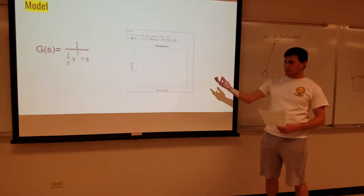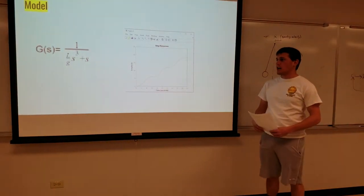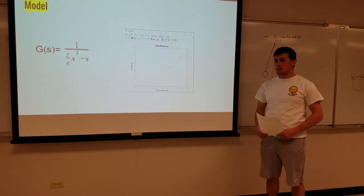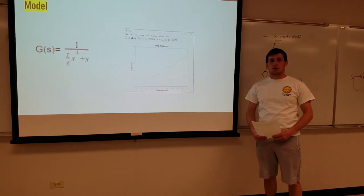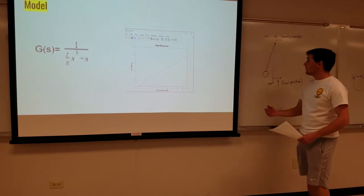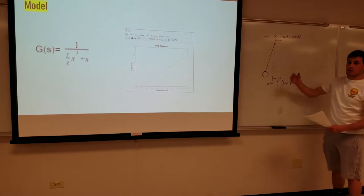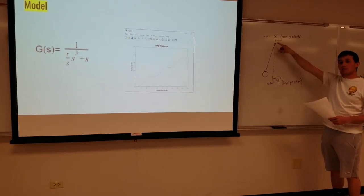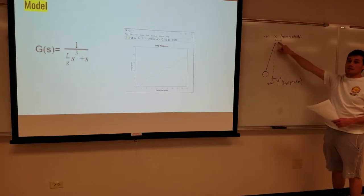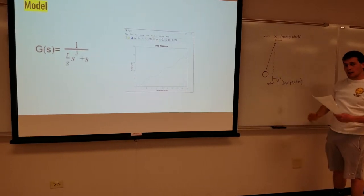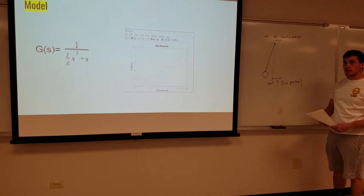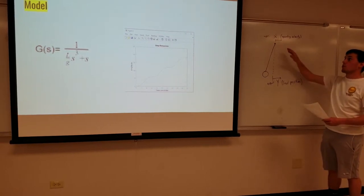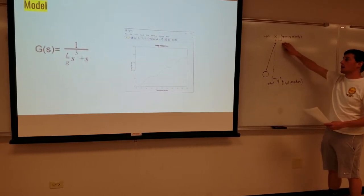So for our model, this was our transfer function 1 over quantity L over Gs cubed plus S. So this transfer function was arrived at from a physical model of our system. So here is our gantry trolley. Our input to the system is the gantry velocity. So this was very important and has some implications in future parts of our analysis. So it's very important to note that it is the velocity of the trolley.